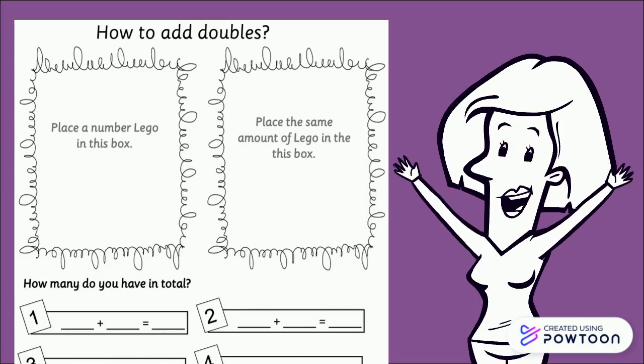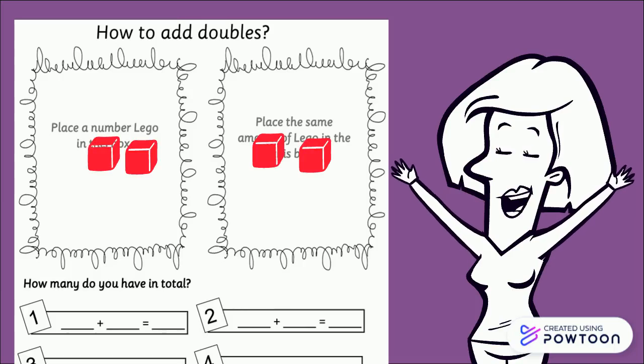Let's double the number two. I put two cubes on one side and another two cubes on the other side. We add them together and we have four. Double two is four.